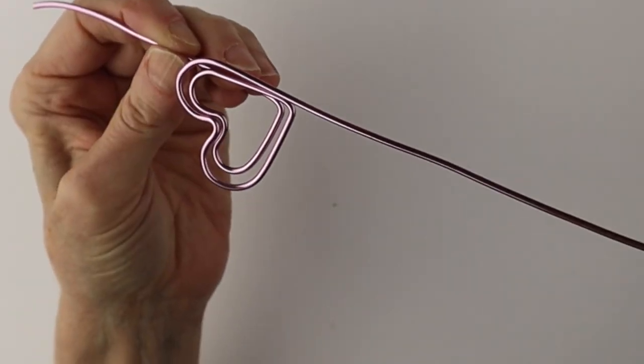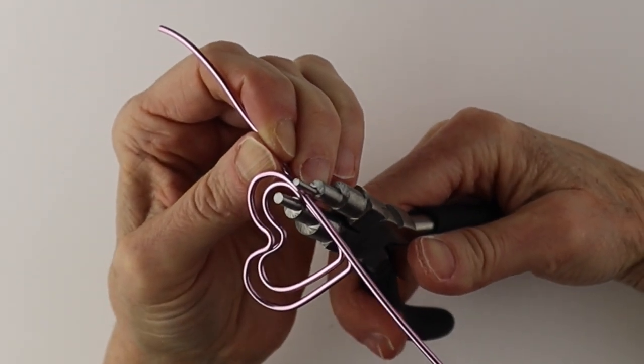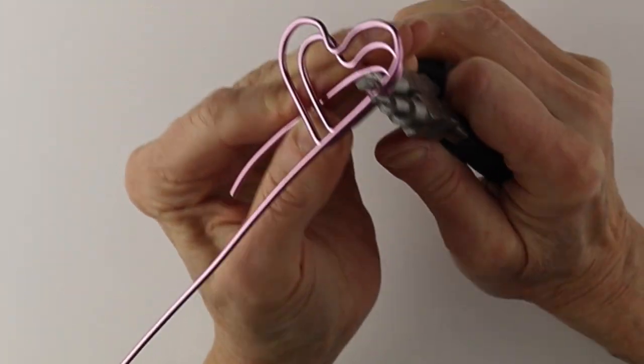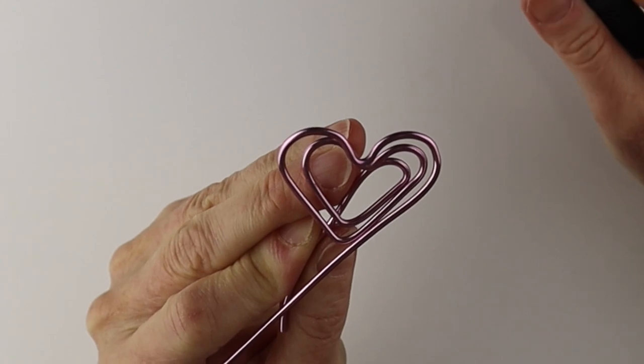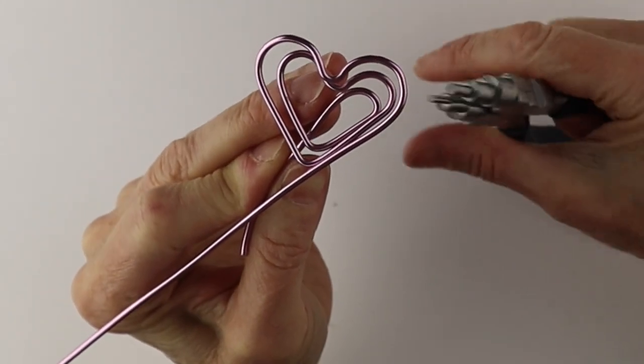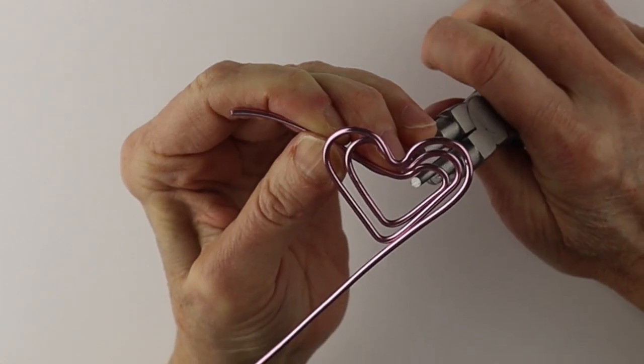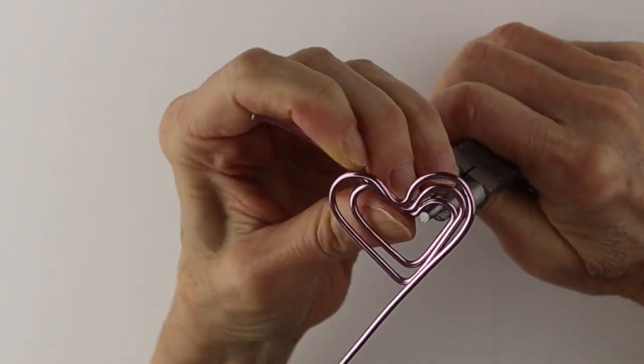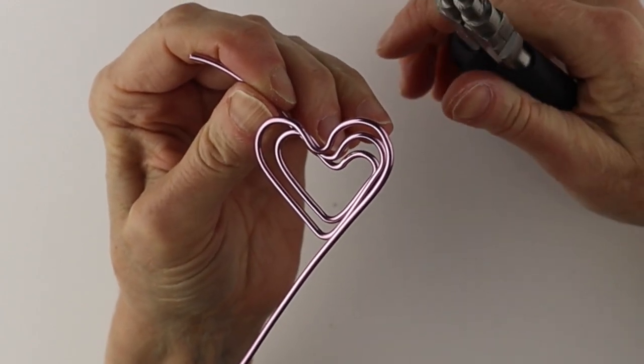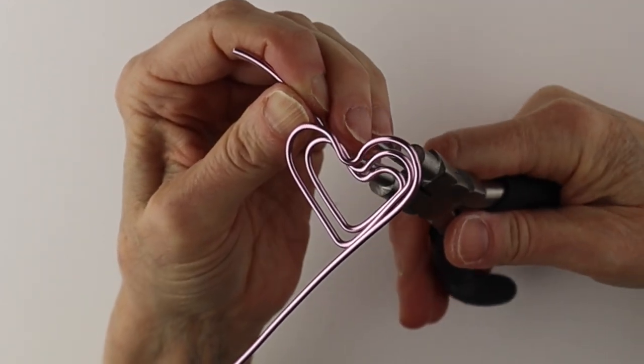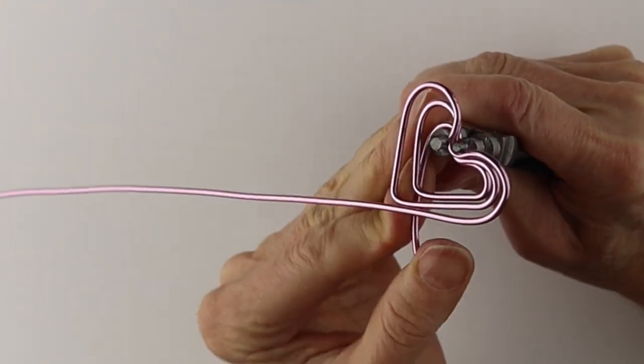So bring it up and then get your looping pliers again. You can also use the end of a marker or a pen if it's easier and then we're going to find the smaller end of the looping pliers to bring the wire up. Wiggle it around until it fits right in there. Flip your pliers and bring it around and down.